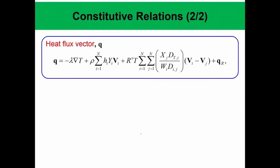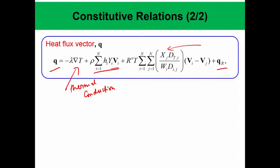The heat flux vector is given by: first, the thermal conduction term — this is the thermal conductivity times the temperature gradient. Second, there is enthalpy transport — heat flux arising due to different heat contents and diffusion velocities, so diffusion velocities can also cause thermal transport. Third, there is a heat flux arising from differences in species diffusion velocities. And there can also be a radiation term q_radiation.